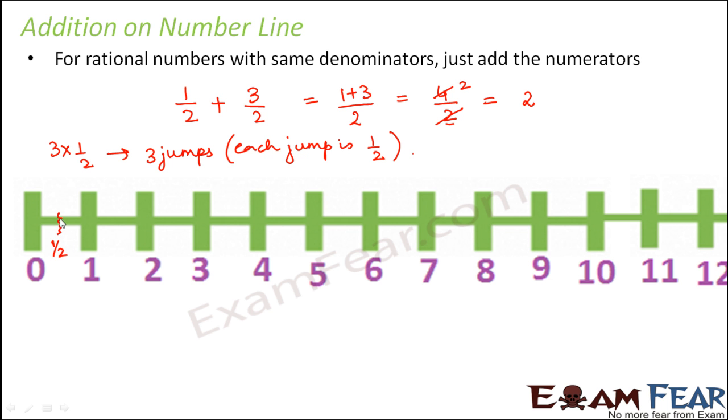You start from 1 by 2 and to 1 by 2 you have added 3 by 2. 3 by 2 means 3 jumps where each jump is 1 by 2. From here, one jump of 1 by 2 will take you to 1. The next jump of 1 by 2 will take you somewhere between 1 and 2. And the third jump of 1 by 2 will take you to 2. So even on the number line, you have proved that when you add 3 by 2 to 1 by 2, you reach at 2.